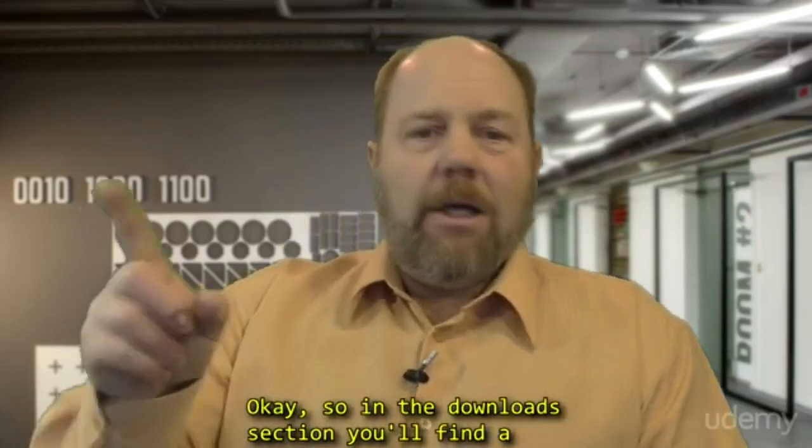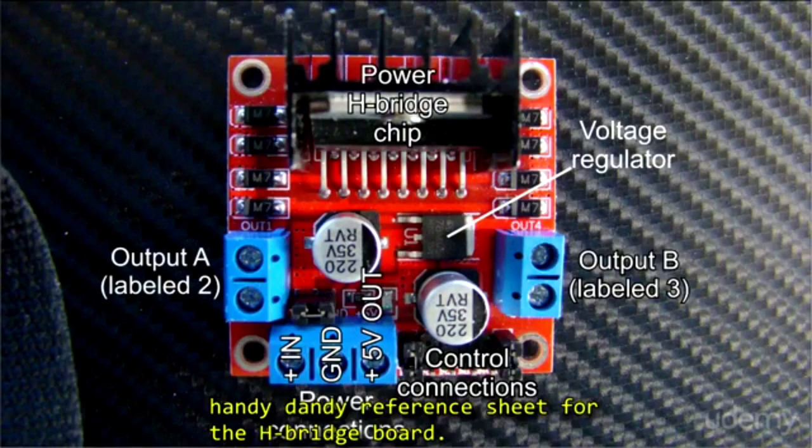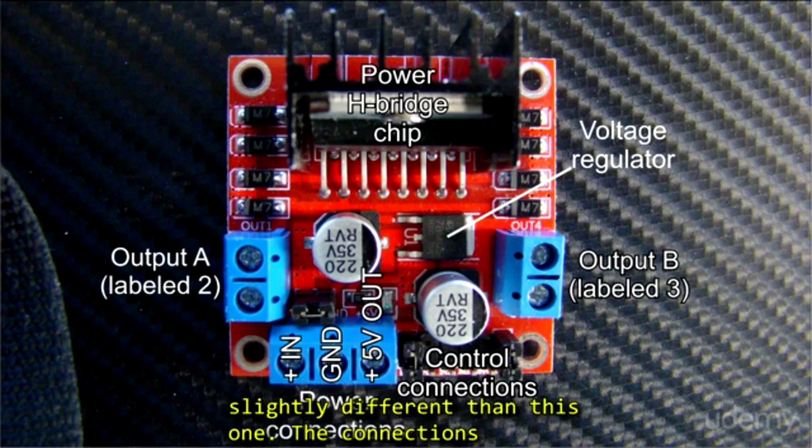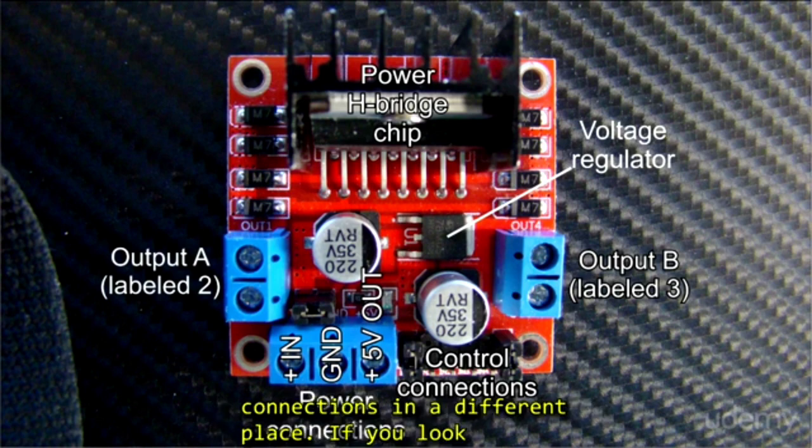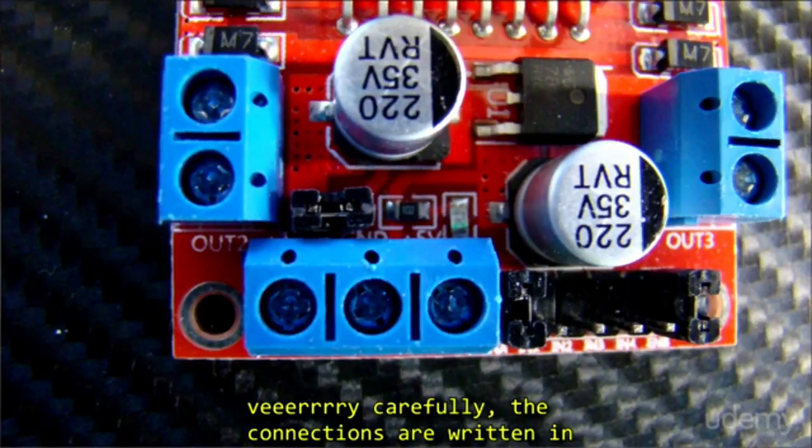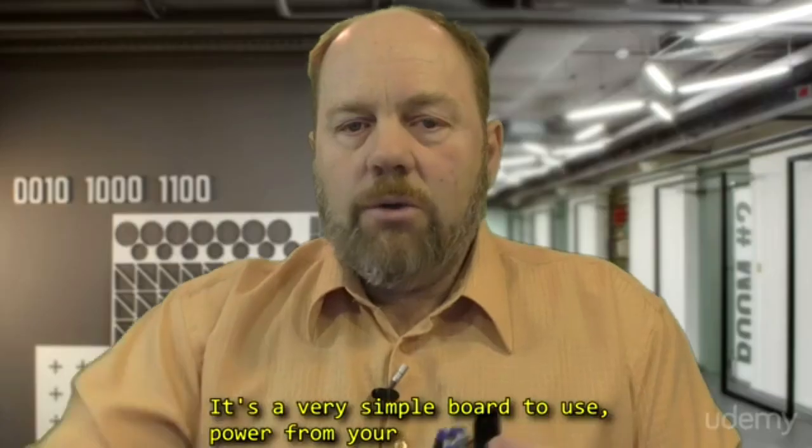Okay, so in the downloads section you will find a handy reference sheet for the H-Bridge. If you provided your own parts, yours may be slightly different than this one. The connections should all be the same, but they might have connections in a different place. If you look very carefully, the connections are written in the silkscreen on the board itself. It's a very simple board to use.